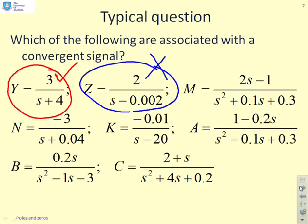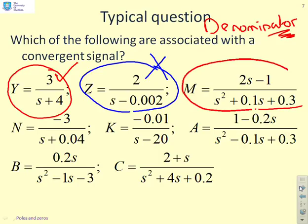The only polynomial that really matters is the denominator. The numerator makes no difference to the assessment of stability. So even though M has 2s minus 1 in the numerator, that's irrelevant to stability. All I'm looking at is the denominator, and therefore M is convergent, because I've got s squared plus 0.1s plus 0.3. Similarly, N, although it's got minus 3 in the numerator, it's only the denominator I care about. It's got s plus 0.04, so that corresponds to a convergent signal.